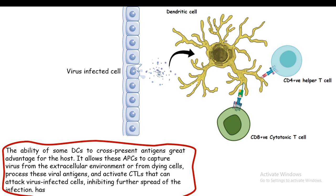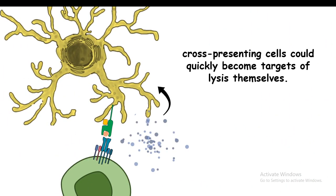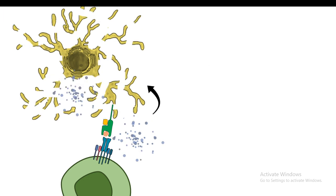Cross presentation also has disadvantages. It can make the dendritic cell more vulnerable to lysis by CD8 positive T cells. Additionally, if the dendritic cell starts presenting self antigens on class 1 MHC, there would be a total breakdown of the tolerance mechanism — CD8 positive T cells would recognize self antigens as foreign and kill the presenting cell, potentially causing autoimmunity. This process therefore needs to be highly regulated.